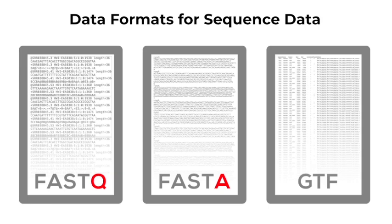FASTA is a text-based file format representing DNA and protein sequences, and is typically the reference file for the genome. Then we have the genome transfer format, or GTF file, which contains genome annotation. For example, the GTF will store the start and end of each genomic element — exon, isoform, and gene.